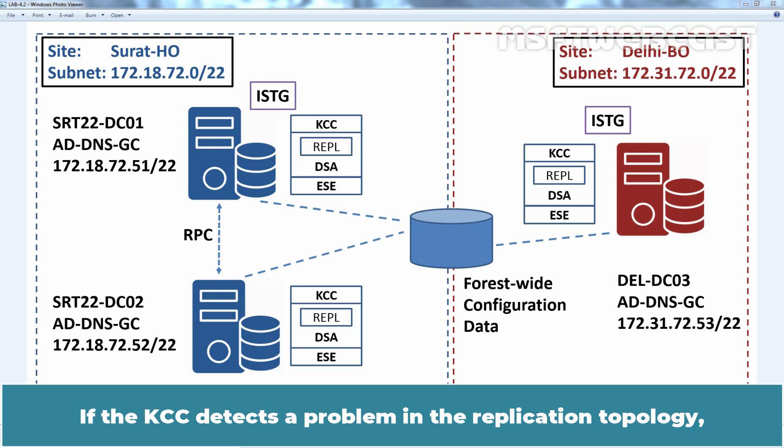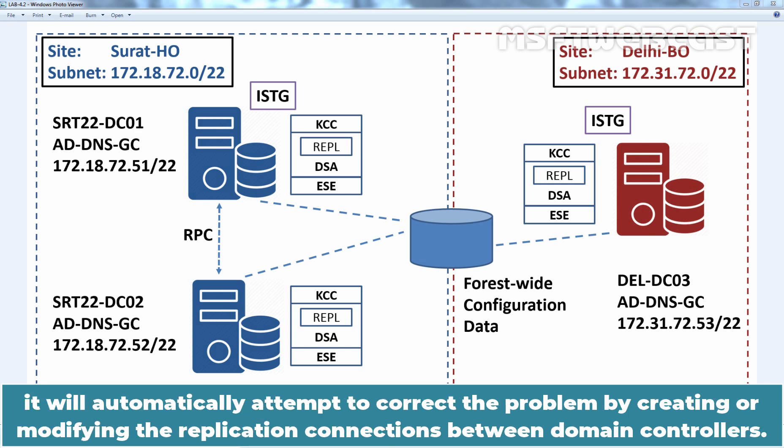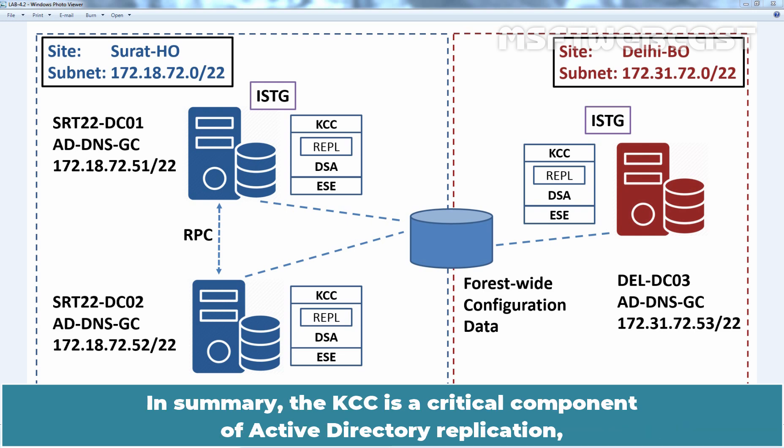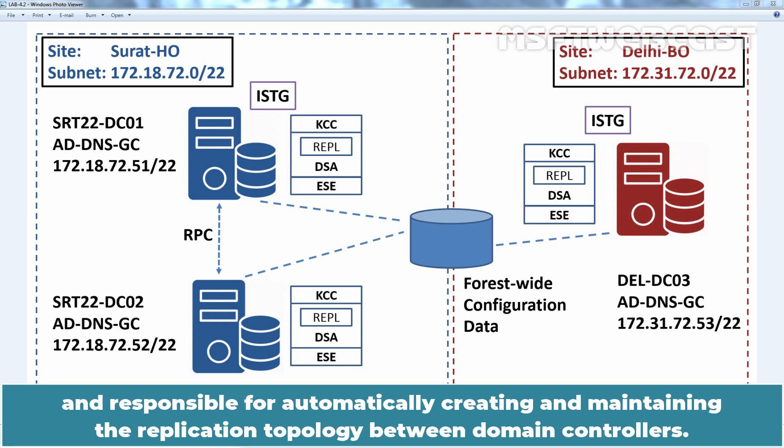If the KCC detects a problem in the replication topology, it will automatically attempt to correct the problem by creating or modifying the replication connections between domain controllers. In summary, the KCC is a critical component of Active Directory replication and is responsible for automatically creating and maintaining the replication topology between domain controllers.